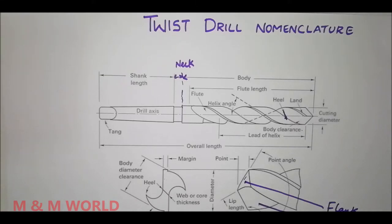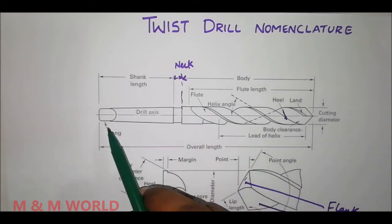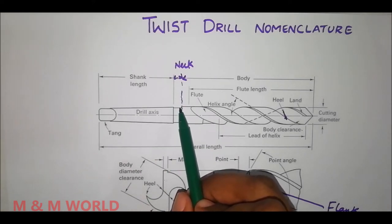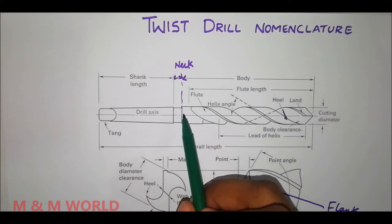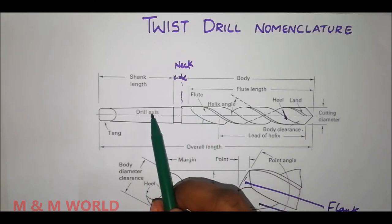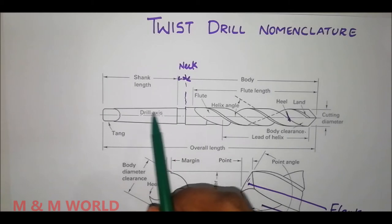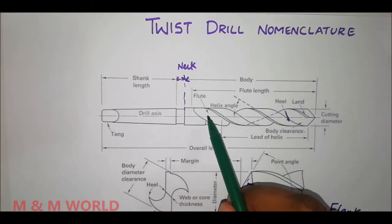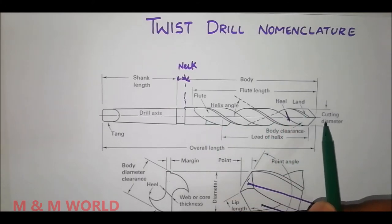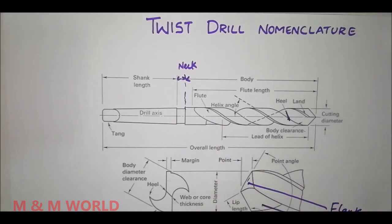In this video we will study about drill nomenclature. Here you can see the various elements and angles associated with a drill. A drill mainly consists of two parts: it has a body and a shank, both separated by a neck. The neck is a diametrically undercut portion between the body and the shank. Here you can see a tapered shank, the various elements: tang, shank, shank length, body, flute, heel, land, cutting diameter, flute length, etc.